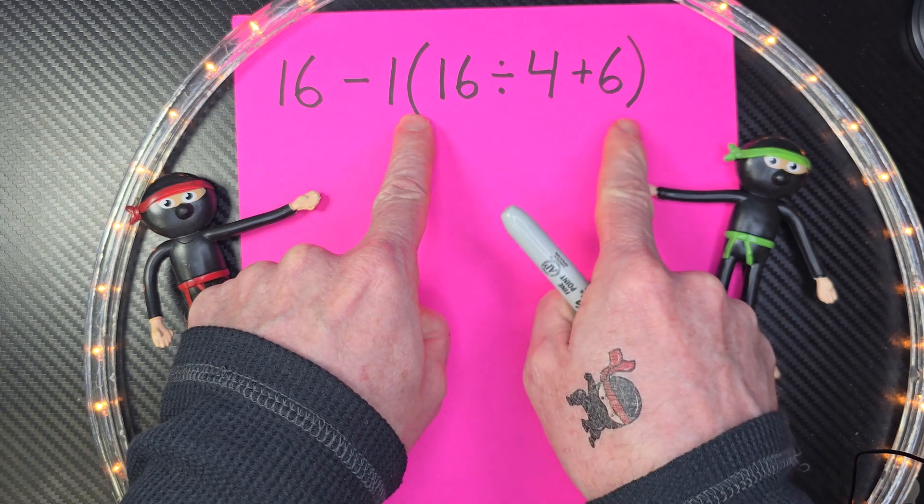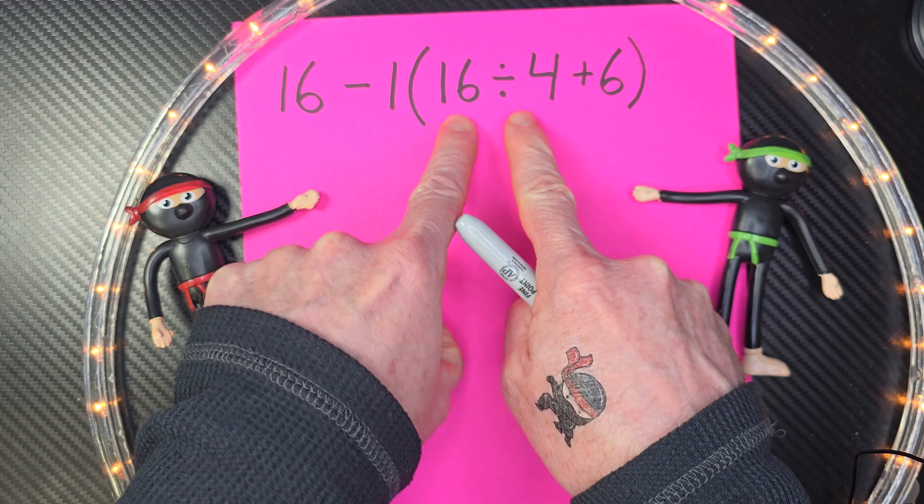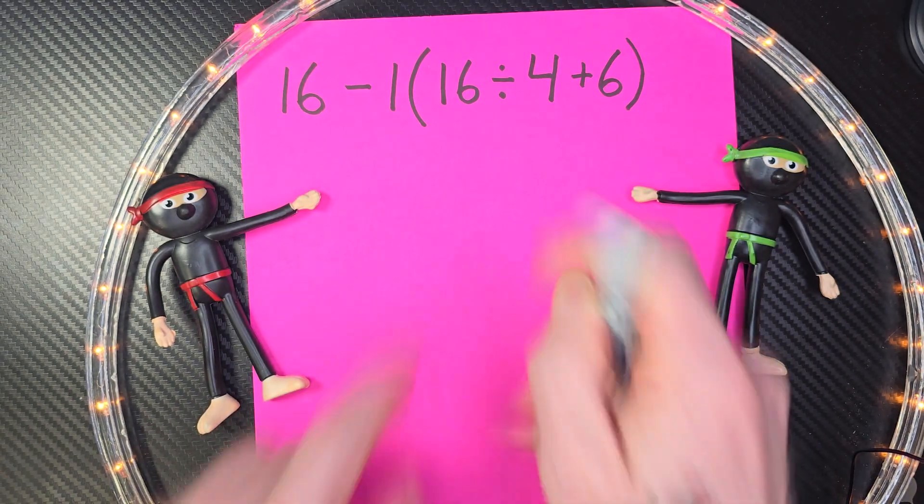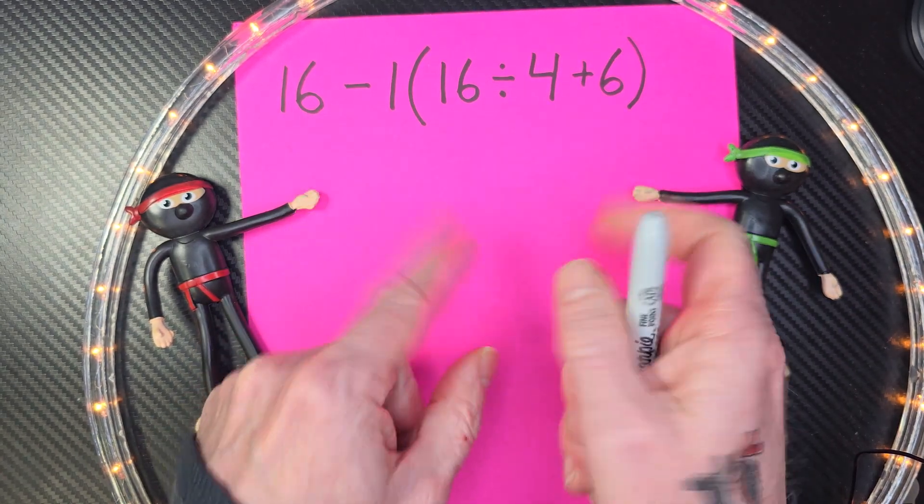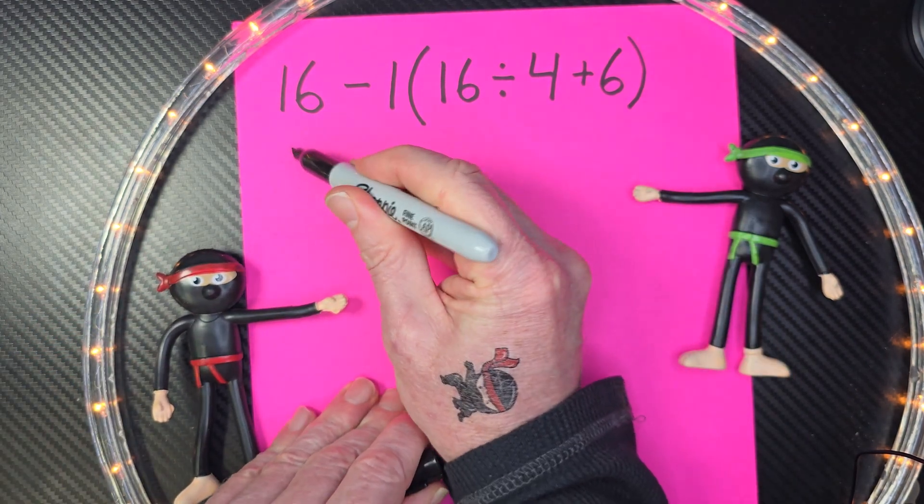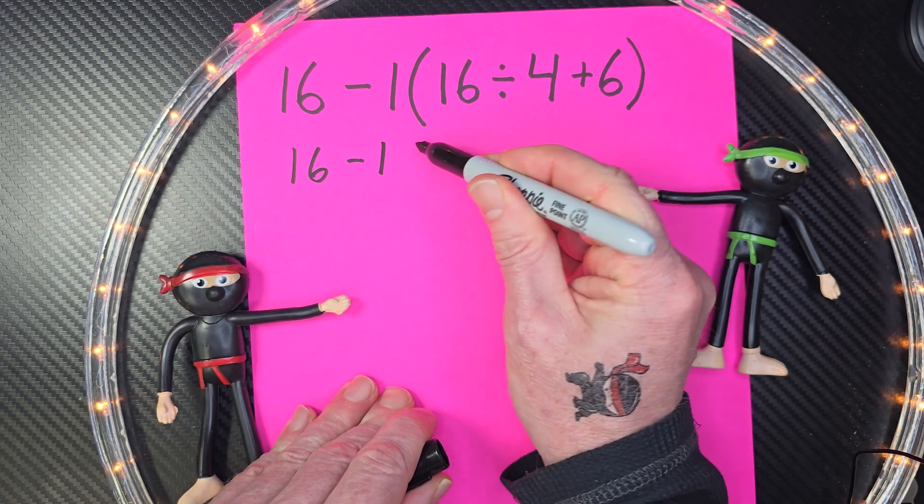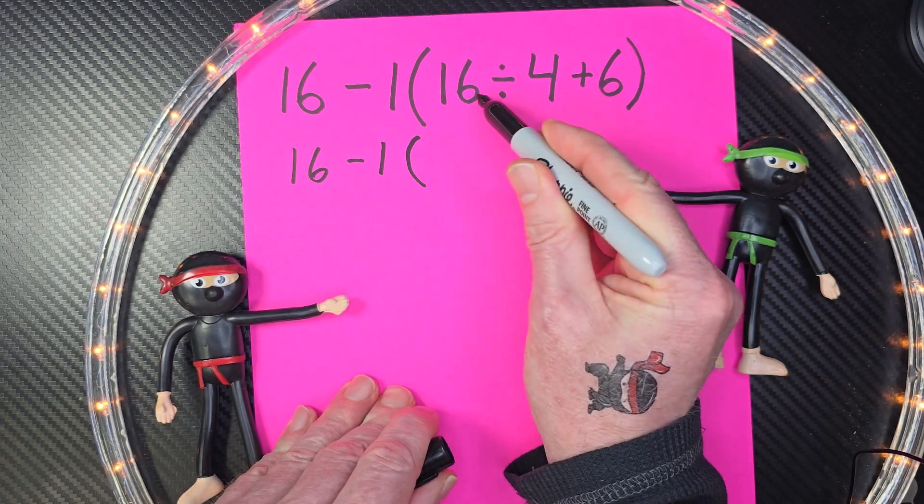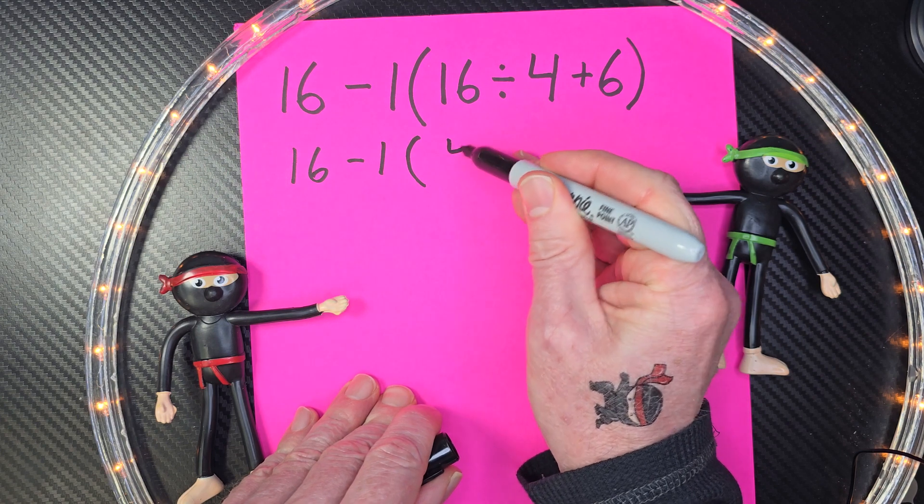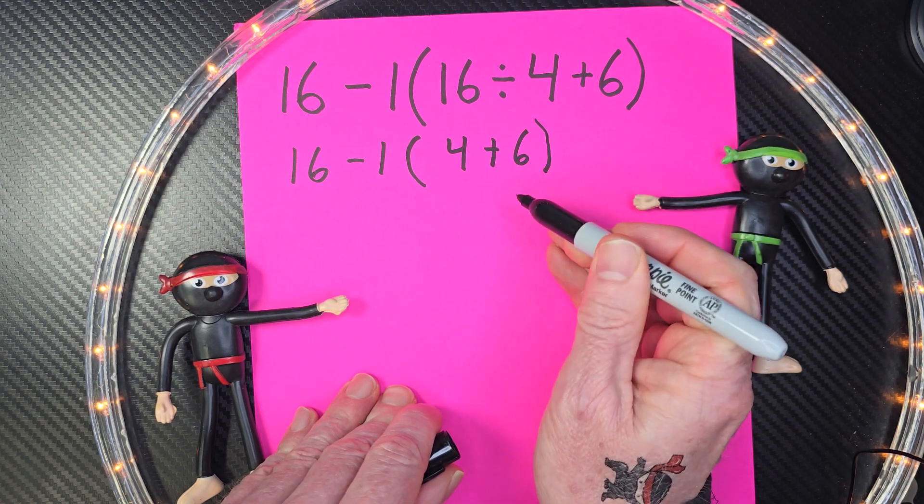We have to do what's inside our parentheses first. And when I look inside the parentheses, I notice a division problem. So we need to do that first, before the other part. I hope you understand what I was talking about, because I got a little tongue-tied there. All right, I'm going to rewrite this problem. 16 minus 1, and then my parentheses here. 16 divided by 4 is 4 plus 6, and put the parentheses there.